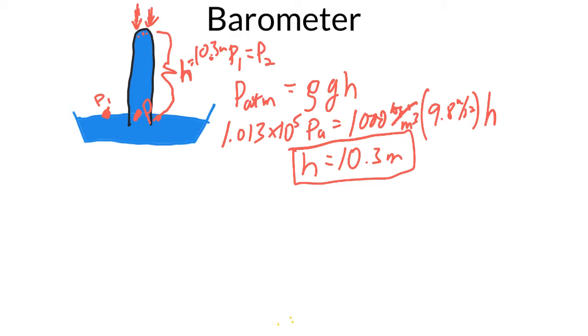Which means the pressure down here, this p2 is actually lower than the atmospheric pressure. So the atmosphere is actually pushing up on this, there's a net upward pressure pushing upwards on the water here.